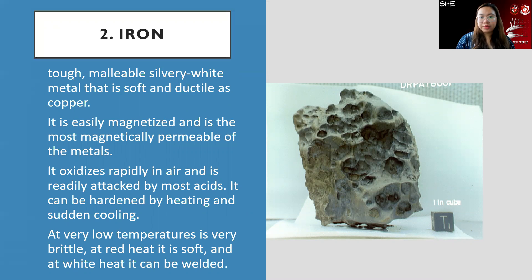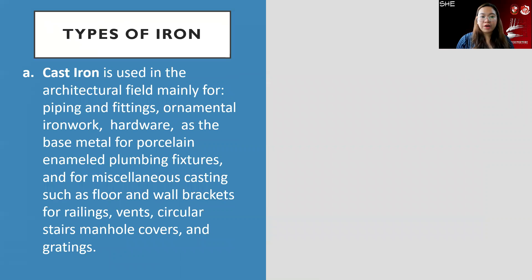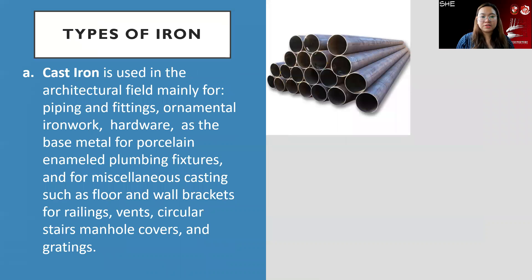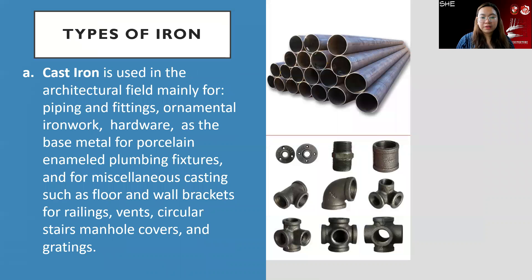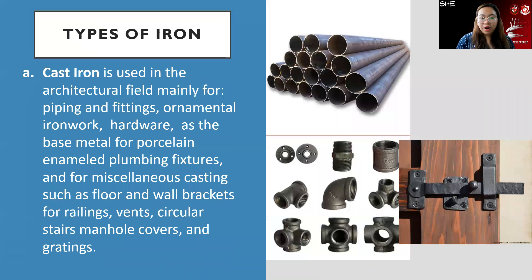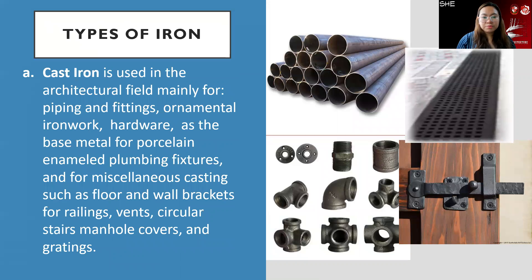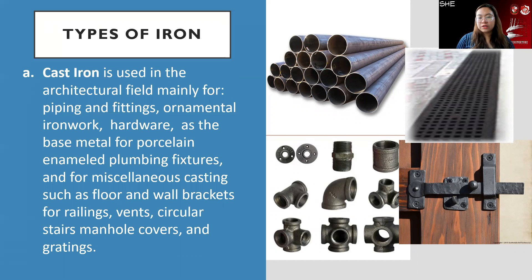Another type of metal is iron — tough, malleable, silvery-white metal that is soft and ductile. At very low temperatures it is very brittle, but at white heat it can be welded. Cast iron is used in the architectural field mainly for piping and fittings, ornamental ironworks, hardware, base metal for porcelain enamel plumbing fixtures, wall brackets, railings, vents, circular stairs, manholes, and gratings.